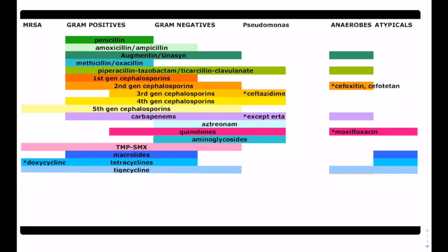We also have the tetracyclines. Doxycycline will cover MRSA, gram positives, gram negatives, atypicals, but it does not cover pseudomonas or anaerobes. There's also tigacycline, which basically covers everything except pseudomonas, but honestly I've never seen it used myself.